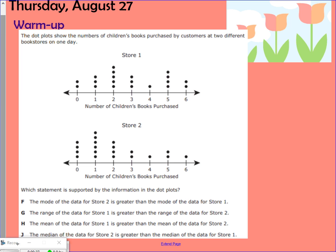Okay, so going through, the dot plots show the number of children's books purchased by customers at two different bookstores. We're going to be comparing these two dot plots. It asks which statement is supported by the information in the dot plots. So hopefully you read through, and the answer is going to be H. If you need help calculating the range median for each one, you can ask the teacher if you have a question about it.